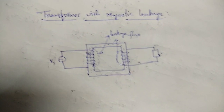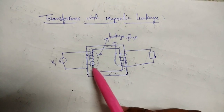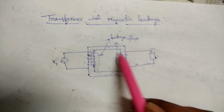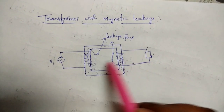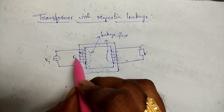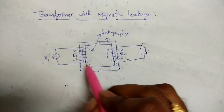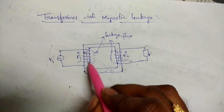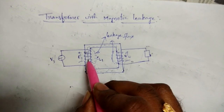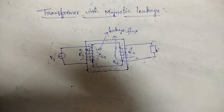This 5% leakage flux does not have any role in transferring power. We can say leakage flux is the flux which links only one winding and does not link with the other winding. Because of the main flux, EMFs e1 and e2 are induced as we have already seen. But because of this leakage flux also there will be some EMF induced — I am calling it el1 induced in the primary and el2 induced in the secondary.